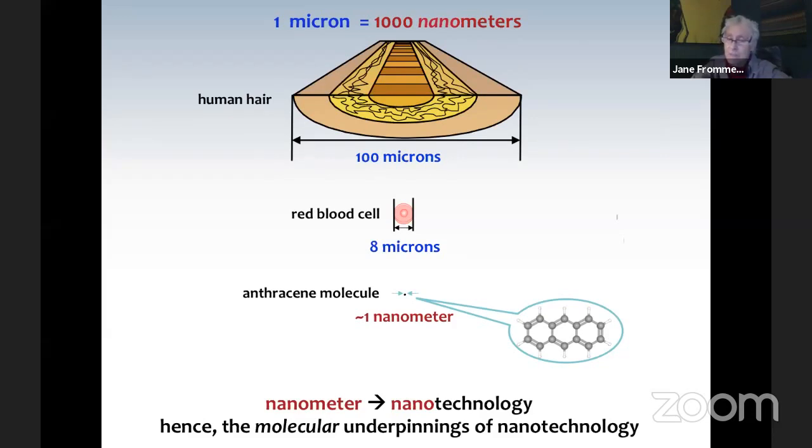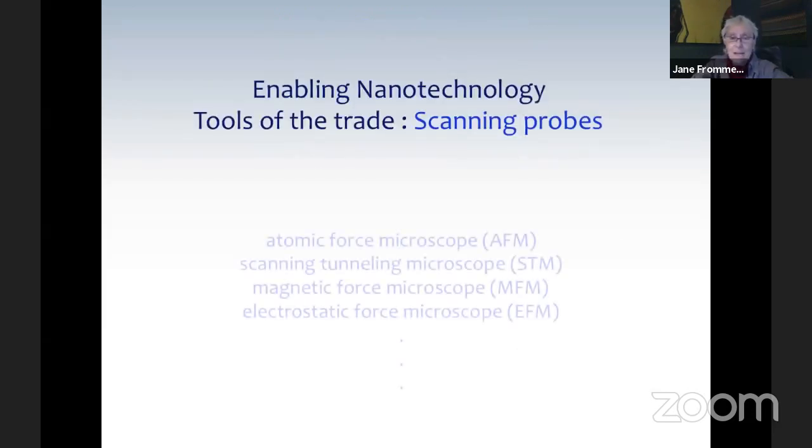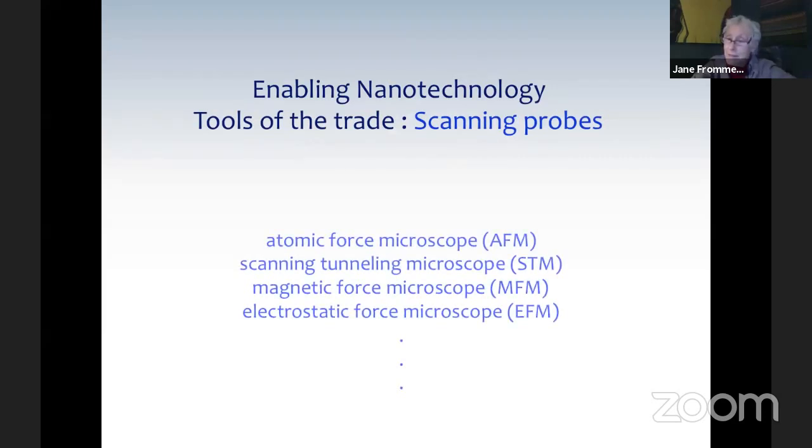Sometimes you hear the word angstrom. That's one tenth of a nanometer. If we're going to make things very small, how do we know we made that? How do we know we made what we drew in our designs and PowerPoints, on the back of envelopes and on whiteboards? We have to somehow be able to prove that we actually made what we thought we made.